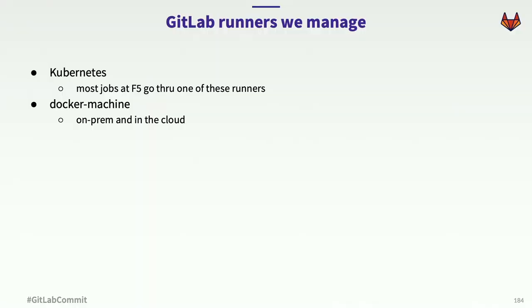We manage two main types of GitLab runners. We have our Kubernetes runner, which has most of the jobs — about 90% of CI jobs at F5 go through one of our Kubernetes runners. We also have Docker Machine, both on-prem and in the cloud. Being a networking company, sometimes you need to configure custom networks in your jobs. Docker Machine gives you a dedicated VM for your job to set up custom networking topology within Docker, which you can't really do in Kubernetes.